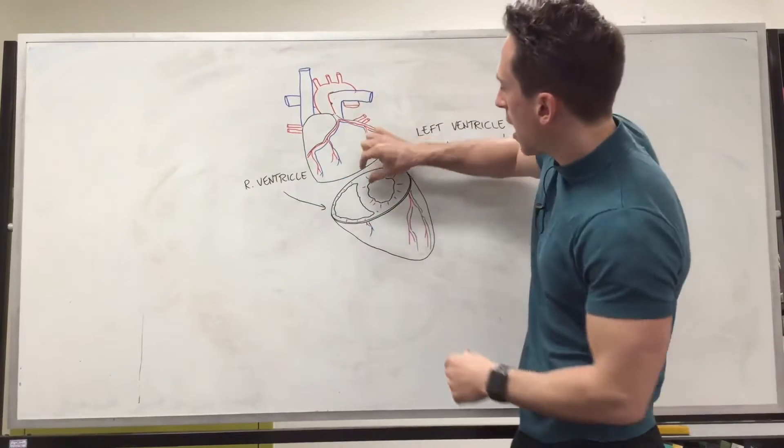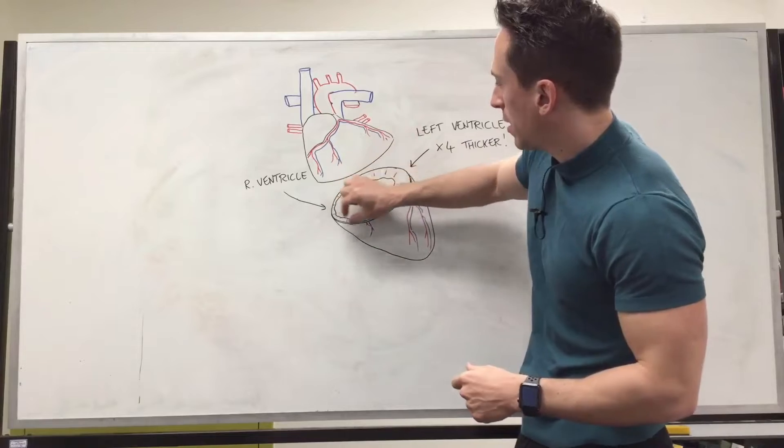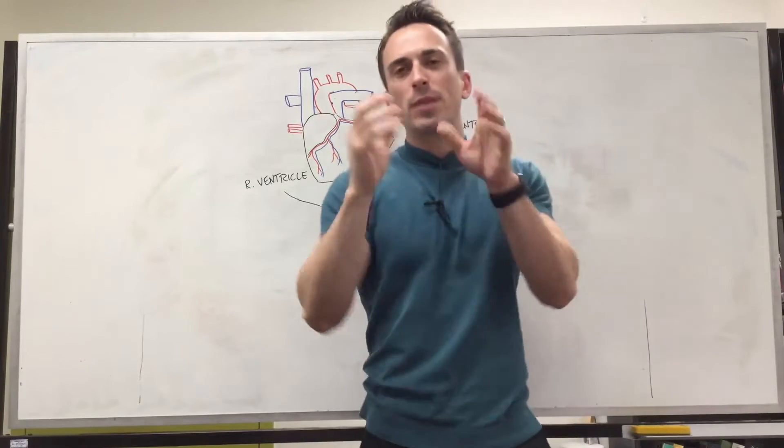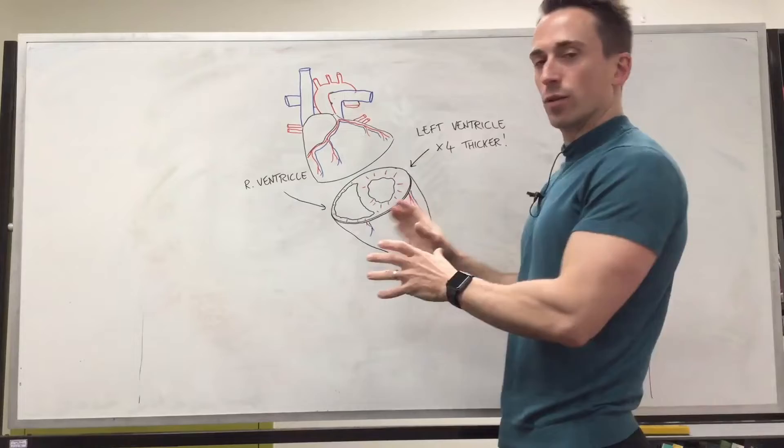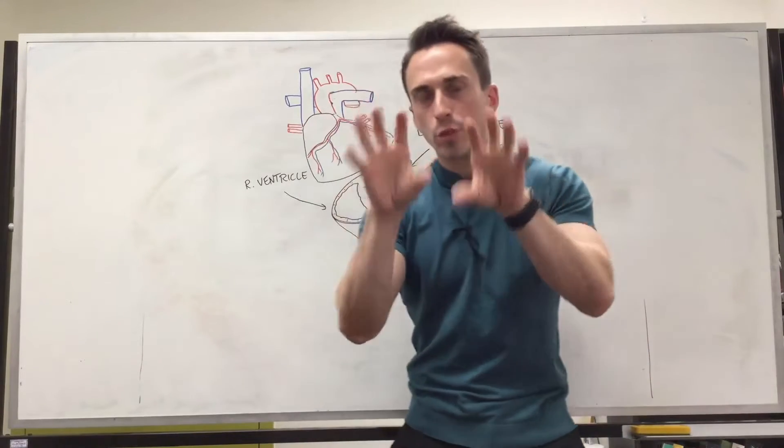And what you can see is the heart muscle varies in width throughout the heart, specifically when we look at the ventricles. So the ventricles are the two bottom chambers of the heart.